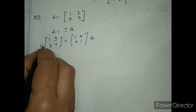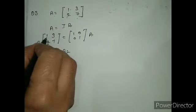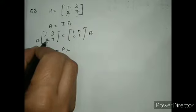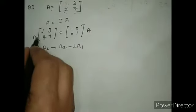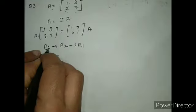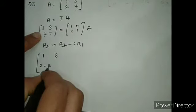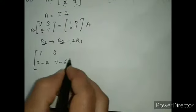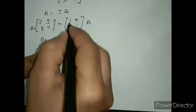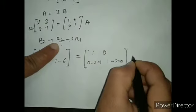Change जो होगा वो R2 में होगा तो R2 write करो। देखो 2 में से 0 बनाने के लिए, R1 को 2 से multiply करके minus करूंगी, तो 0 हो जाएगा। So operation R2 minus 2R1 apply करते हैं। पहले R1 as it is लिखो। R2 पर: 2 minus 2×1=0, 7 minus 2×3=1. Same thing on identity matrix: 1, 0 as it is; 0 minus 2×1 = minus 2, 1 minus 2×0 = 1. This is A.